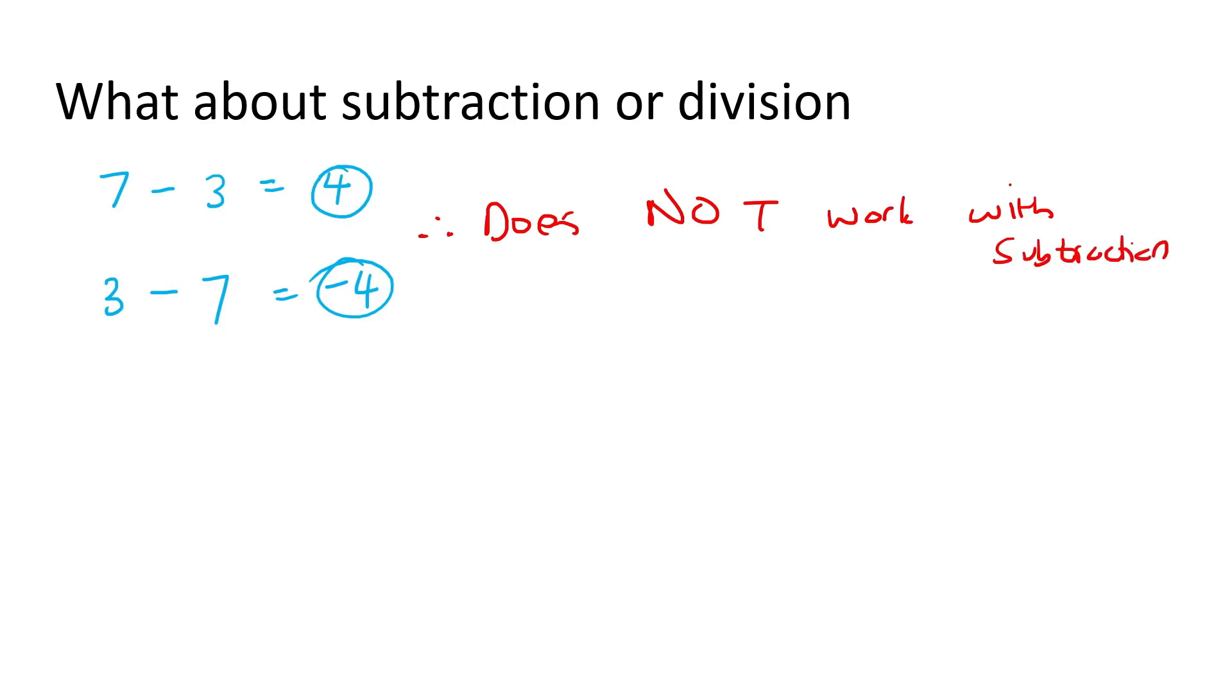What about division? Well, let's say 10 divided by 2. What is 10 divided by 2? That's 5. What is 2 divided by 10? Now some students say 5, but it's actually not correct. If you do it on your calculator, you would actually end up getting like a fraction, maybe 1 over 5, or your calculator might say 0 comma 2, which is definitely not the same as this. So therefore, does not work with division.